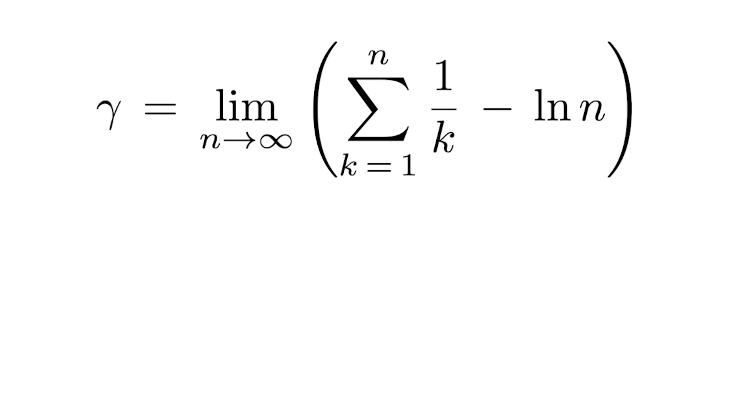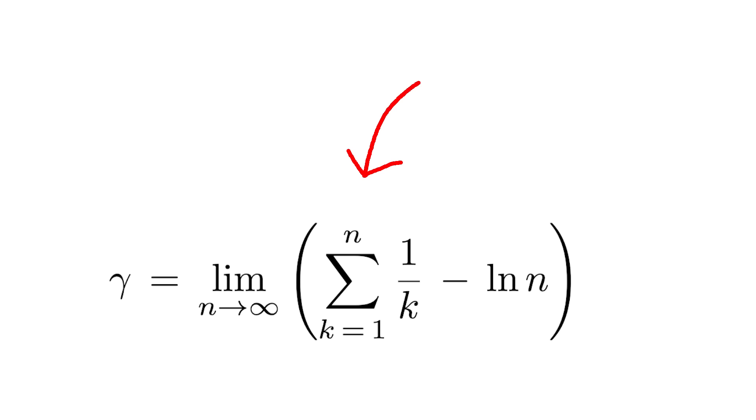Meet the Euler-Mascheroni constant. It's a real number, approximately 0.5772, with a closed form that's not terribly ugly. The sleek way of putting words to those symbols is gamma is the limit of the difference of the harmonic series and the natural log. So it's a combination of two very well-understood mathematical objects. It has other neat closed forms and appears in hundreds of formulas.